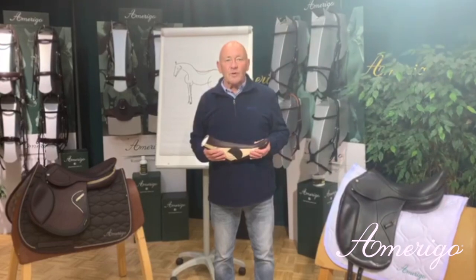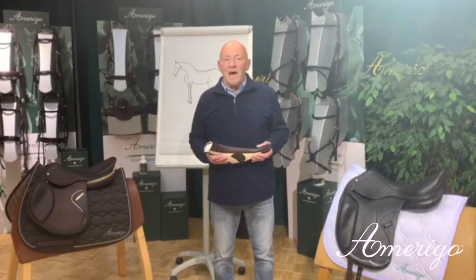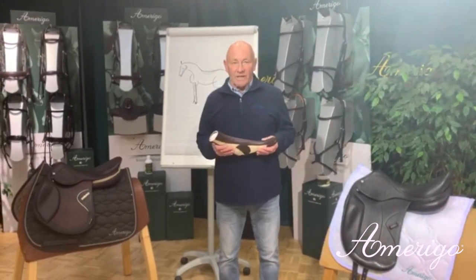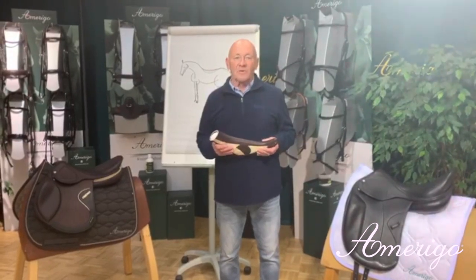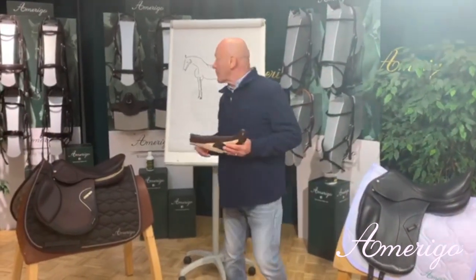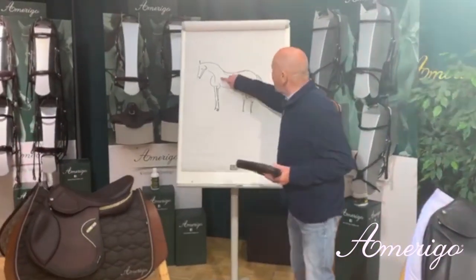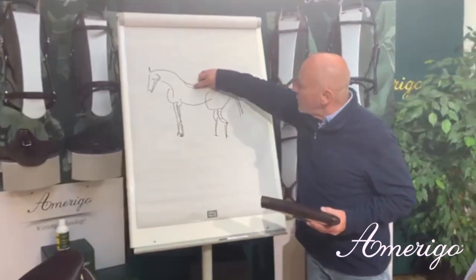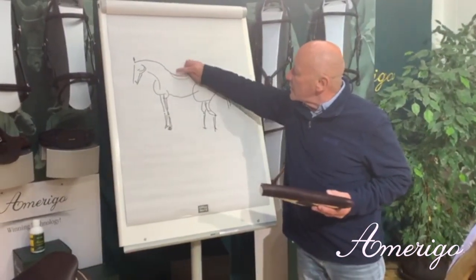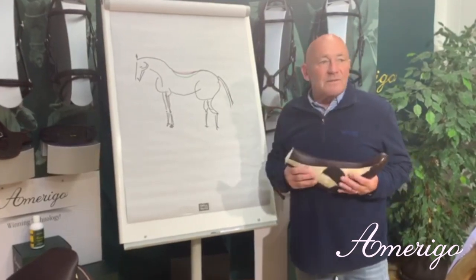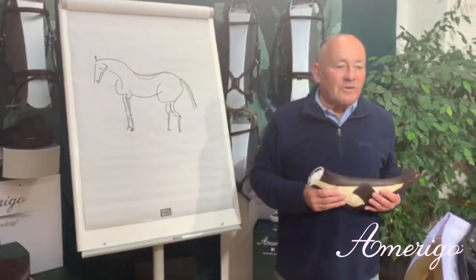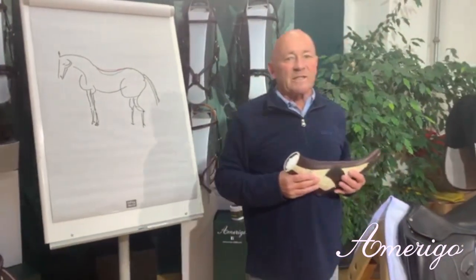Hello everybody. One of your questions was how do we determine the correct density and consistency of the panel. There are two main criteria. The first one is the top line of the horse, where we can see how much we need to compensate to get the right balance of the saddle. The second criteria is the weight of the rider.